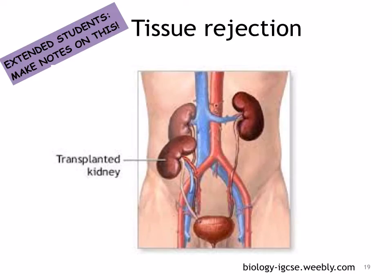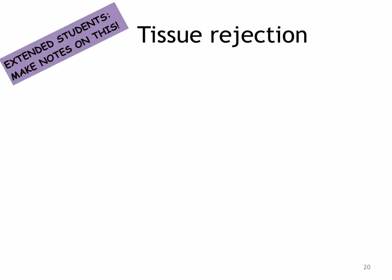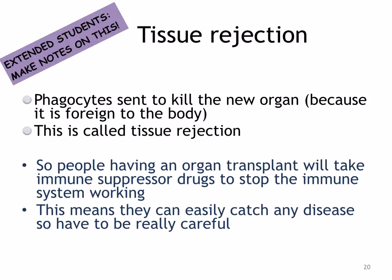If you're doing extended, you need to make notes on tissue rejection. Sometimes people can receive an organ transplant — for example, a kidney — from another person. The tissue type of the donor and recipient must be matched as closely as possible. Even with a good match, the recipient's immune system will recognize the new organ as foreign. The body will send phagocytes to kill the new organ — we call this tissue rejection. People having an organ transplant will take immune suppressor drugs to stop their immune system working, which means they can also easily catch any disease, so they have to be very careful.